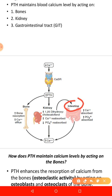PTH also acts on the intestine, but here it acts indirectly. It increases calcium absorption and also increases phosphate absorption. PTH increases the absorption of calcium ions indirectly with the help of vitamin D formed in the kidneys. This vitamin in turn increases the absorption of calcium from the GIT by increasing the expression of calcium-binding proteins.